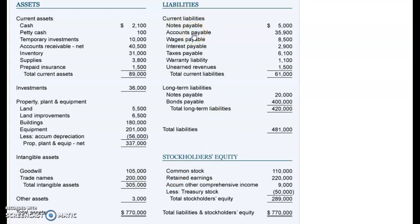On the right-hand side you'll see current liabilities — things you owe that are due in less than a year, such as accounts payable, taxes, and wages. Then there are long-term liabilities — liabilities due longer than a year, so if you have a mortgage on a building, that goes here. After that you get your totals.